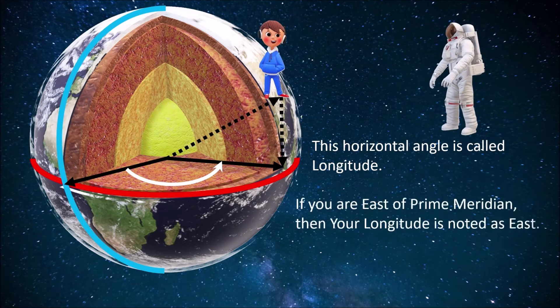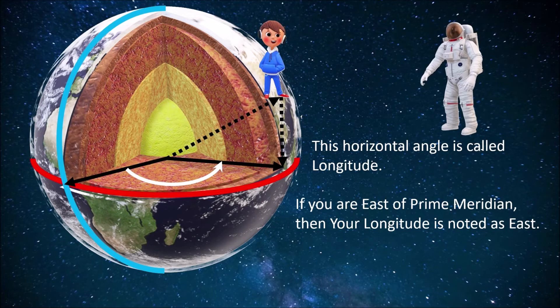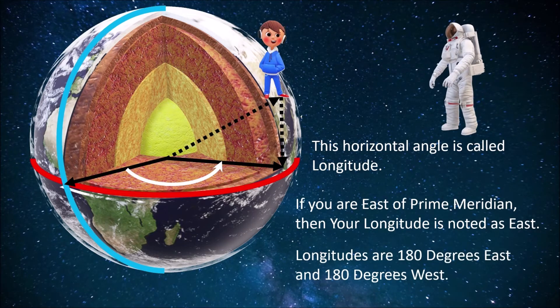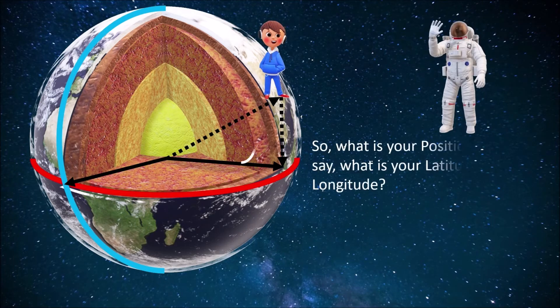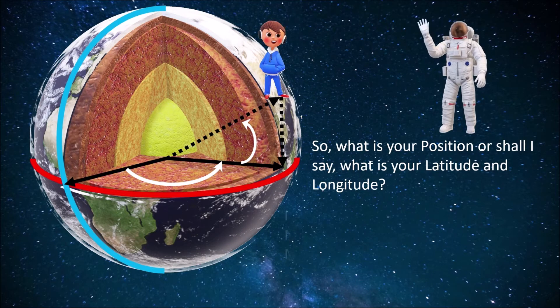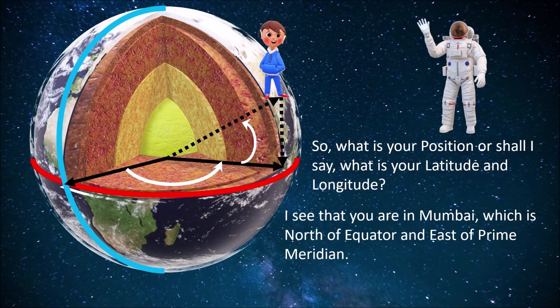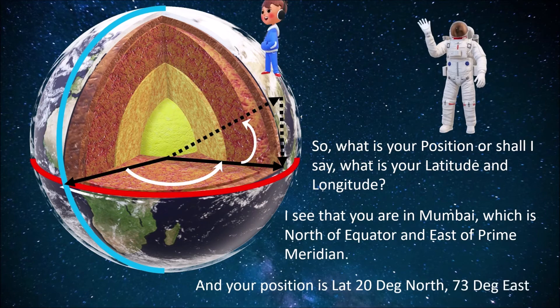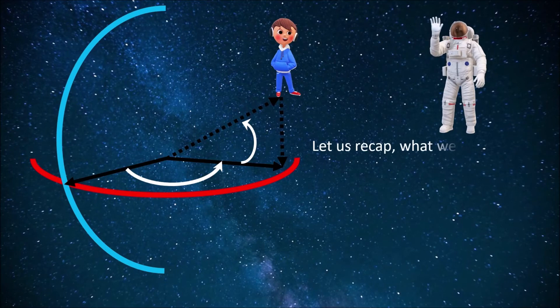If you are east of prime meridian, then your longitude is noted as east. Longitudes are 180 degrees east and 180 degrees west. So, what is your position or shall I say what is your latitude and longitude? I see that you are in Mumbai which is north of equator and east of prime meridian and your position is latitude 20 degree north and 73 degree east.